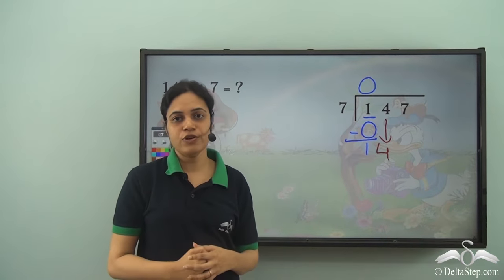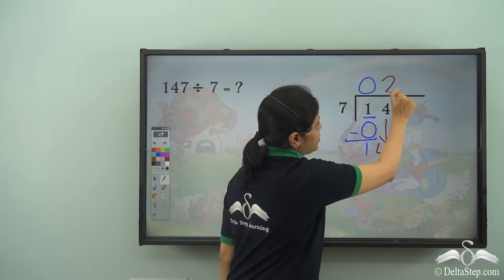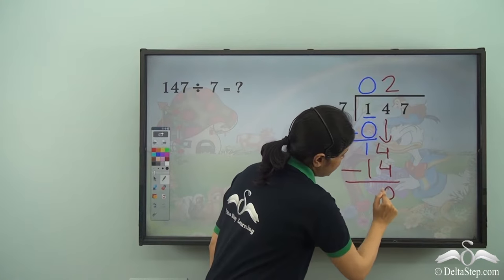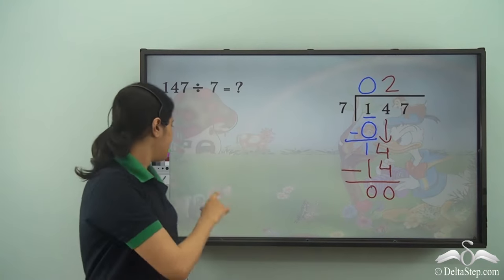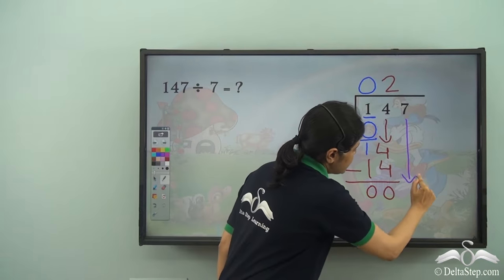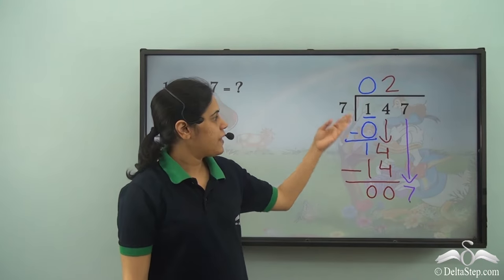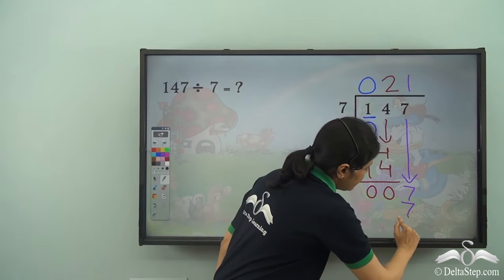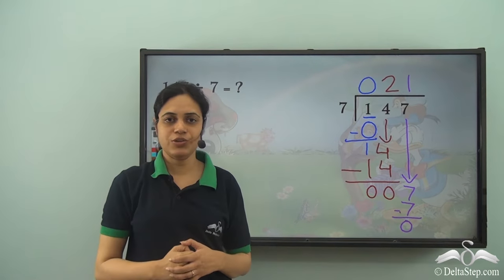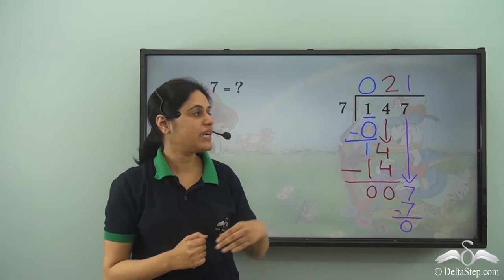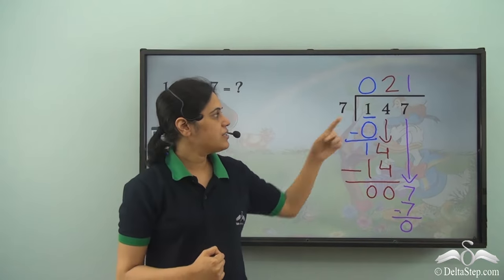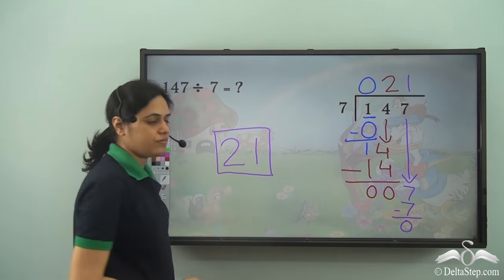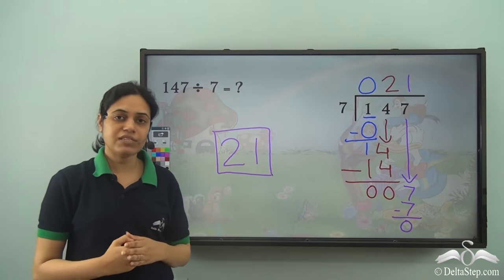How many times does 7 go into 14? 2 times. So I write a 2 here, and 2 into 7 gives me 14. I subtract to get 0. Then I bring down the 7. How many times does 7 go into 7? 1 time. 7 into 1 is 7, and I subtract to get 0. I have completely divided the number and the answer is 021, or only 21. So 147 divided by 7 is 21.